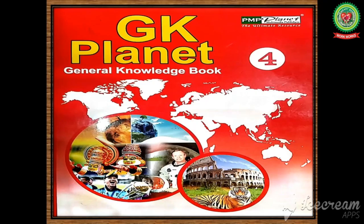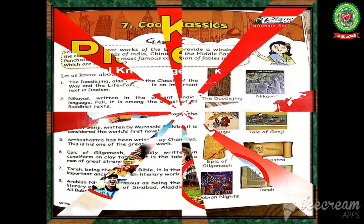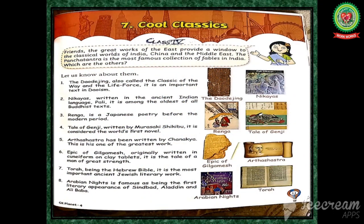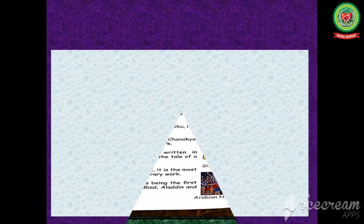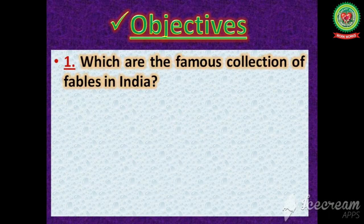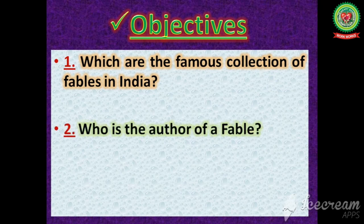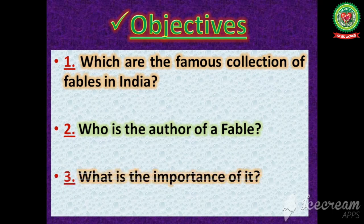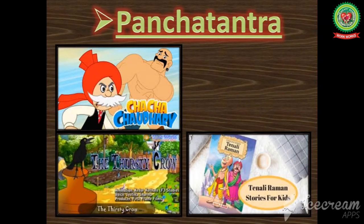Hello students, welcome to the GK class of fourth standard. Today I am going to teach you lesson number seven: Cool Classics, on page number 11. The main objectives of the day are: which are the famous collections of fables in India, who is the author of a fable, and what is the importance of it.